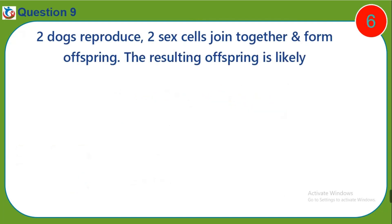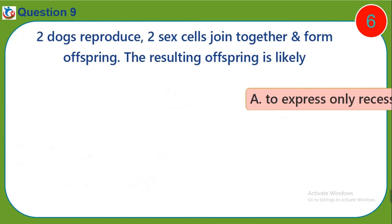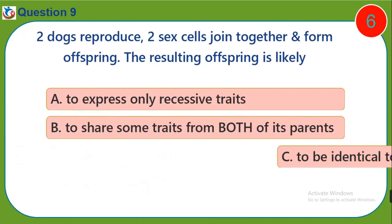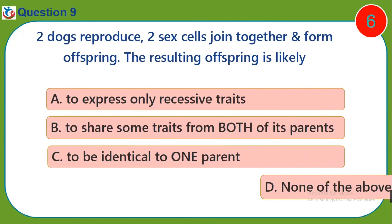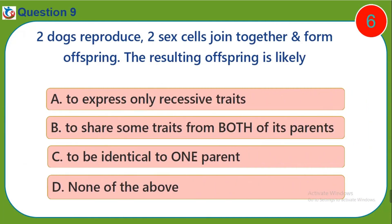Question nine: Two dogs reproduce — two sex cells join together and form offspring. The resulting offspring is likely — a) to express only recessive traits, b) to share some traits from both of its parents, c) to be identical to one parent, d) none of the above.